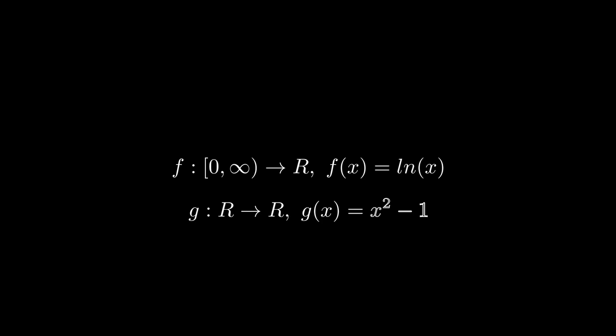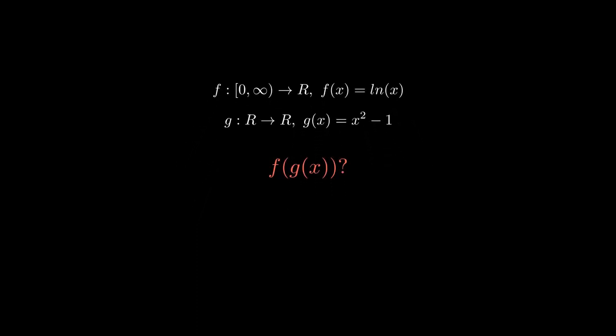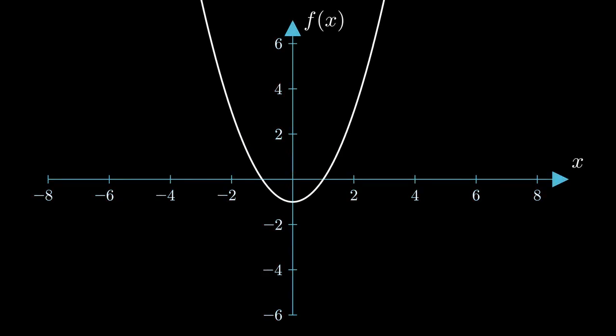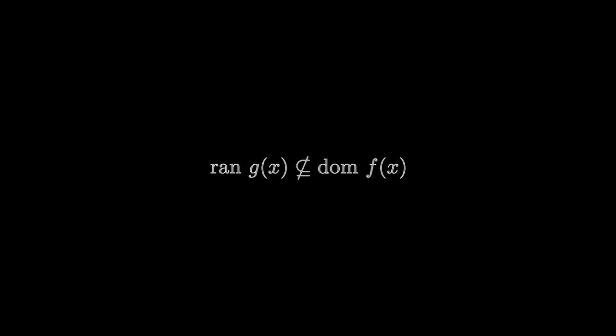Let's say we have two functions. The first function is f(x) = natural log of x, with a domain from 0 to positive infinity. The second function is g(x) = x squared minus 1, with a domain of all real numbers. My question to you is: does the function f(g(x)) exist? Think about this. This is what x squared minus 1 looks like given its domain of all real numbers. The range of this function goes from negative 1 to positive infinity. Notice how this set of numbers is not a subset of the domain of f(x), which ranges from 0 to positive infinity. This means that the composite function doesn't exist.